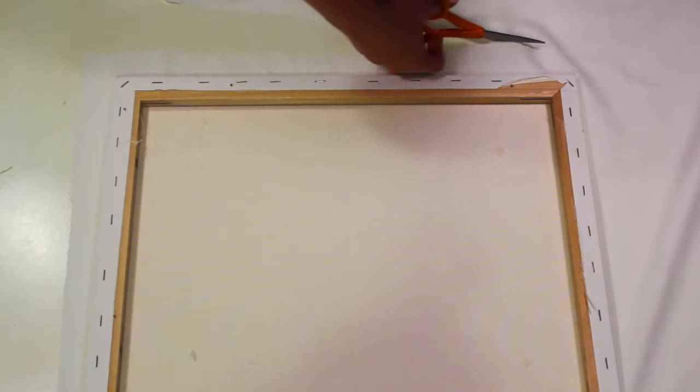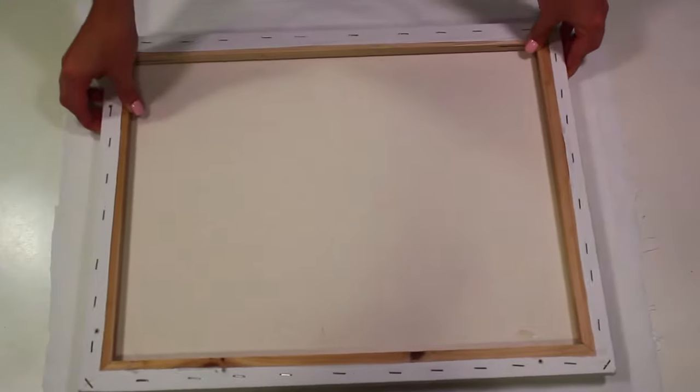So I did about an inch and a half away from the actual size of the canvas. You want to make sure if you're using a patterned fabric to put it upside down so then you can place the canvas on top of that.